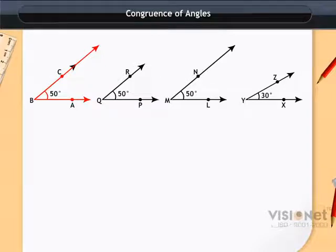You may note that the ray MN appears to be longer than the ray BC. One might think that angle LMN is greater than angle ABC. But it is not true. Rays only indicate the direction and not length.